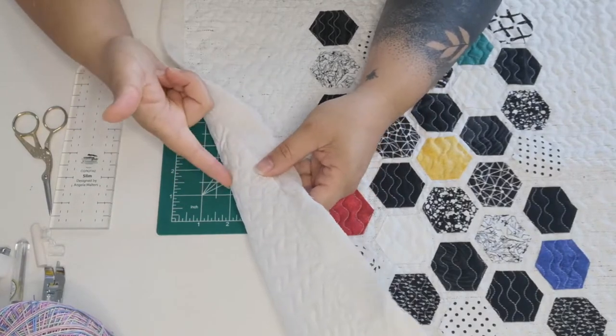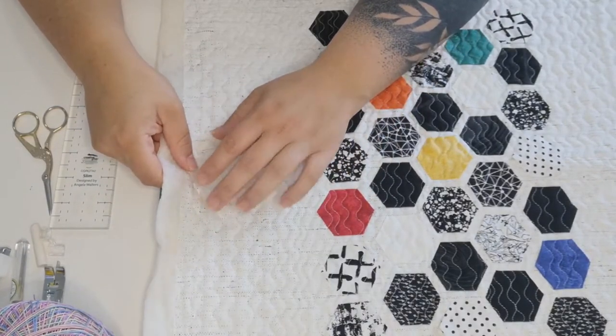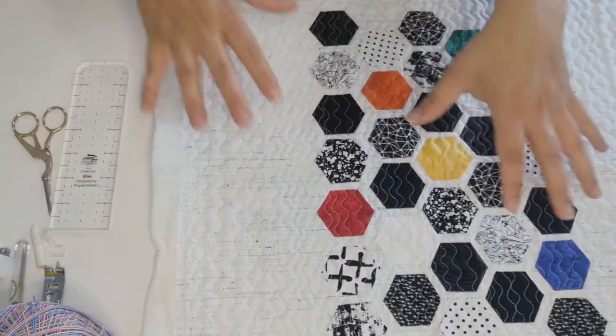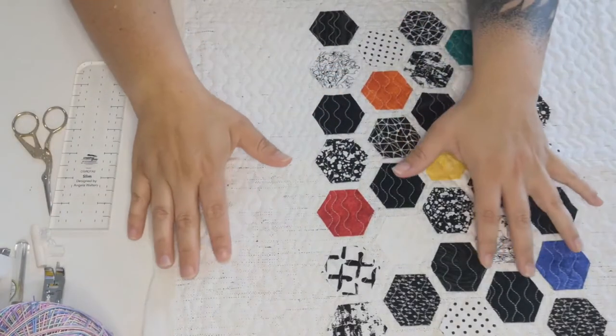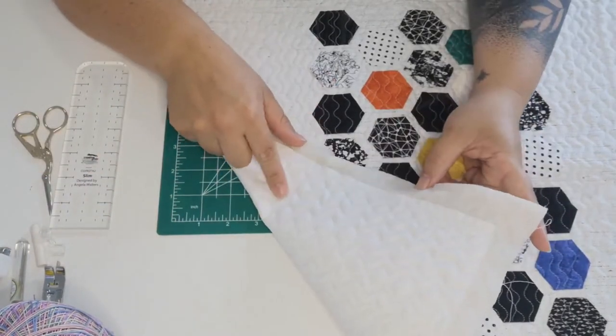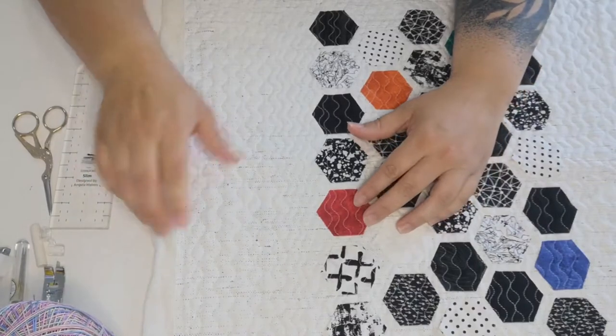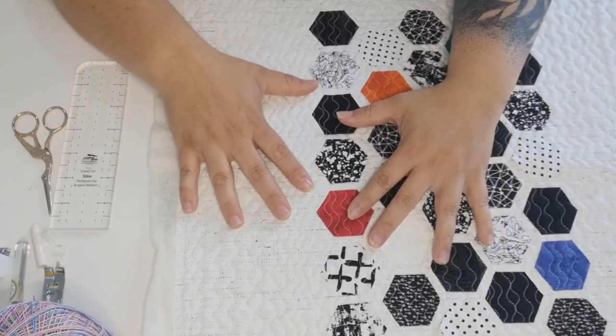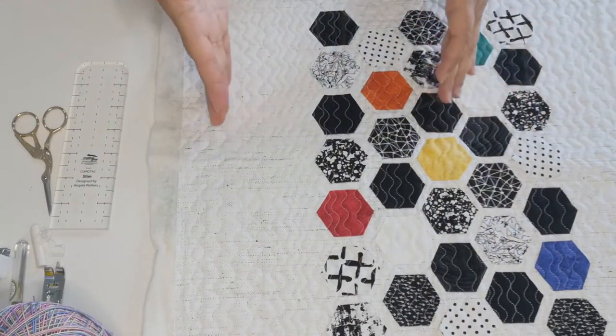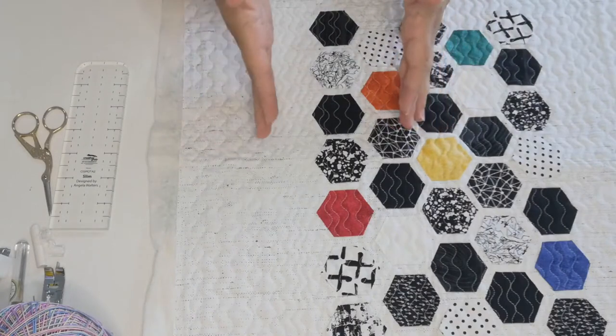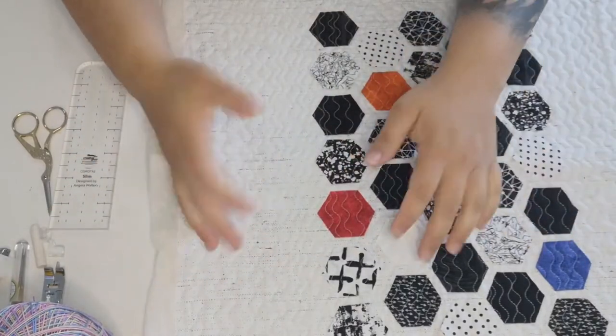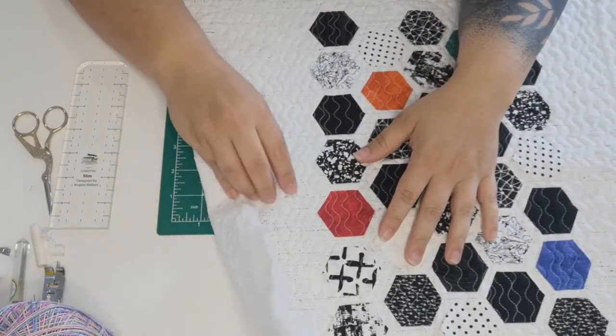The batting and your backing fabric need to be a little bit larger than your quilt topper. I like to have a good two inch border all the way around. So I cut my back fabric and my batting at 24 inches square and my topper is 20 inches square. That allows for some shrinkage because as you quilt it's going to shrink just a little bit, and it also gives you something to hold on to when you're feeding it through the machine.